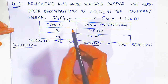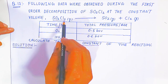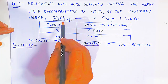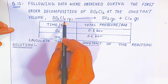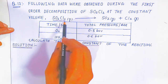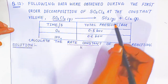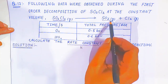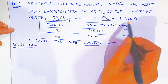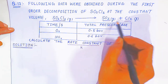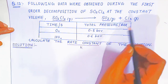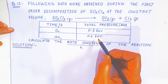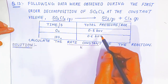Since it is a first order reaction with only one reactant, the thionyl chloride gas is decomposing and forming sulphur dioxide gas and chlorine gas. Because of these two product gases, the pressure increases from 0.5 bar to 0.6 bar.